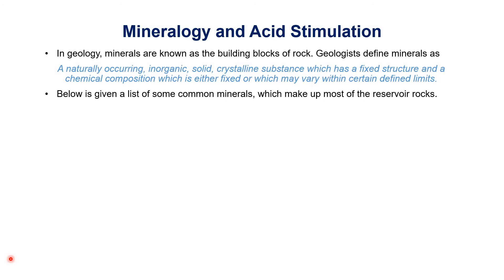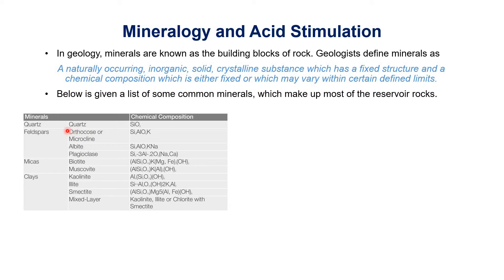Here is a list of common minerals which make up most reservoir rocks. The first mineral is quartz, which is composed of silicon and oxygen — silicon dioxide (SiO₂). Then there is feldspar; different forms of feldspar include orthoclase, microcline, albite, and plagioclase. These are all formed with aluminum, oxygen, potassium, and silicon — basically silicates of aluminum and potassium.